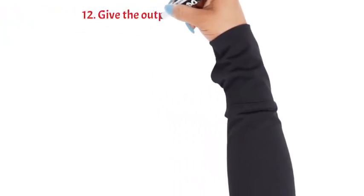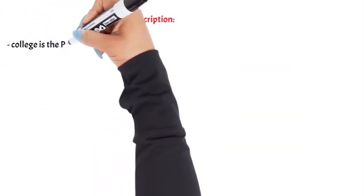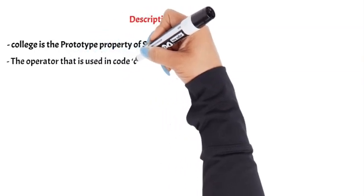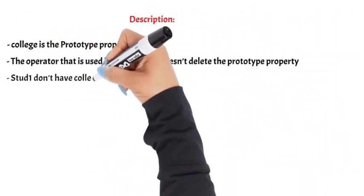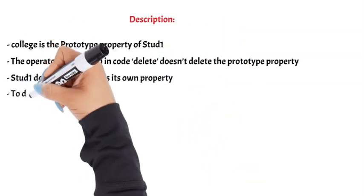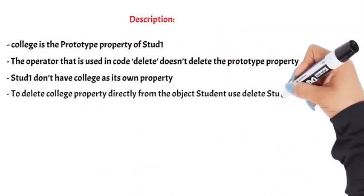Question 12: Give the output of the below code. The output will be ABC. Description: college is the prototype property of STUD1. The operator that is used in code DELETE doesn't delete the prototype property. Thus, STUD1 doesn't have college as its own property. To delete college property directly from the object student use DELETE STUDENT.college.